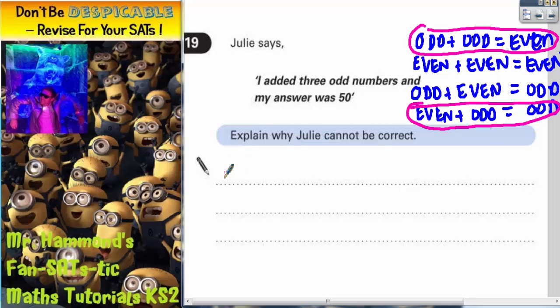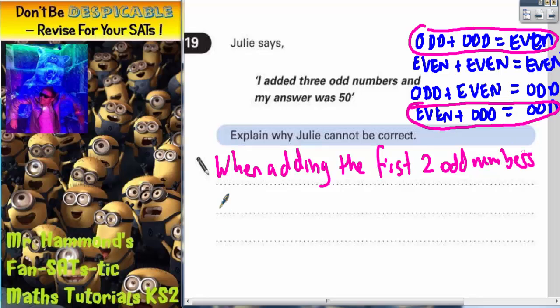So the easiest way to explain it would be to say this: when adding the first two odd numbers, she gets an even result.